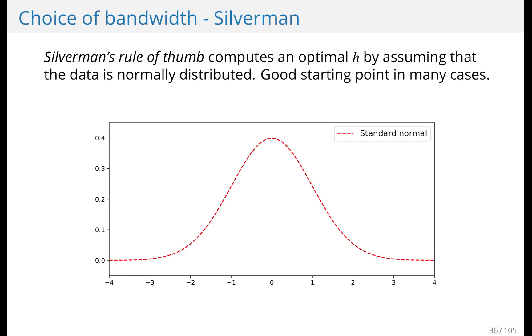It computes an optimal h by assuming that the data is normally distributed. And this is somewhat paradoxical, because if you really knew that the data was normally distributed, you wouldn't use kernel density estimation, you would use maximum likelihood to just estimate mu and sigma. But typically, your data might be close to normal. So then Silverman's rule of thumb is a good starting point.